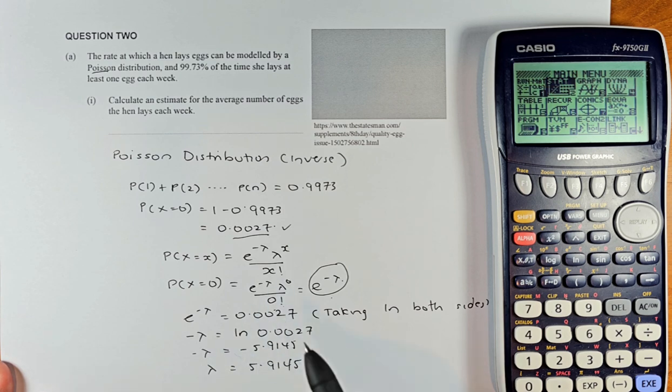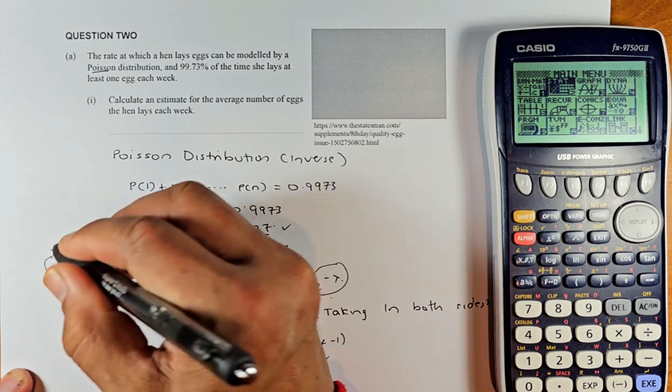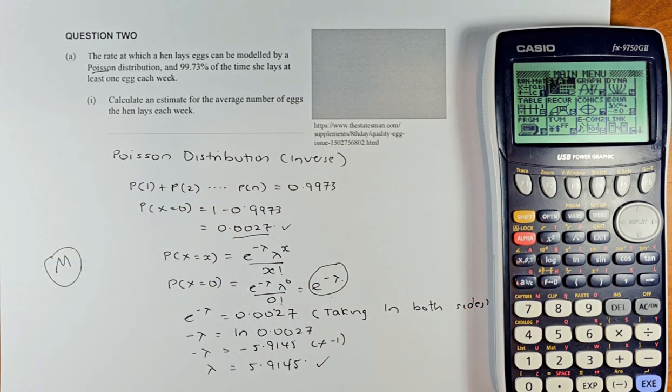To get your lambda, what you are going to do, you just multiply by negative 1 on both sides. So your lambda equals to 5.9145 and that will give you a solid merit in this question. Inverse Poisson and hopefully we will go through again.